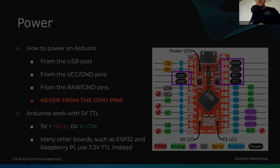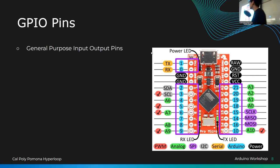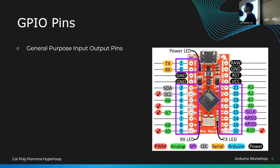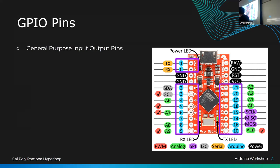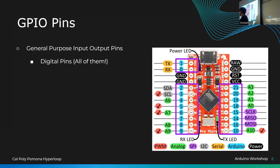GPIO stands for General Purpose Input and Output. Arduino relies on taking inputs to the control board and spitting out outputs — like a black box where inputs go in, something happens, and an output comes out. That's the basis of any control system. On the board diagram, everything shown in blue can be used as a digital pin, meaning it can only be a zero or one — binary.